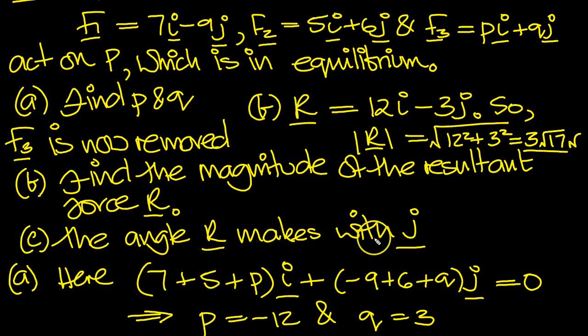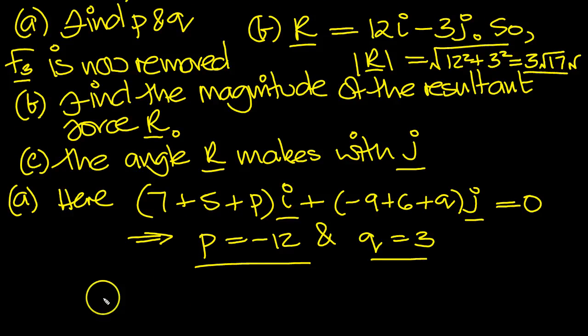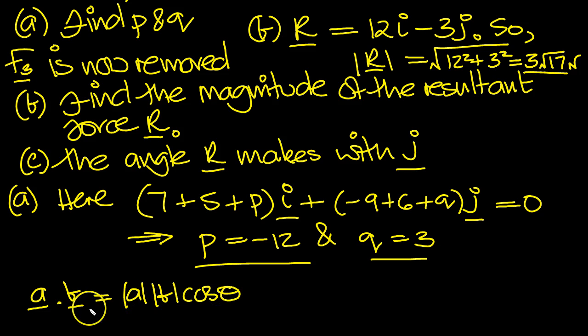OK, the angle R makes with J is what we need to find out finally then. Well, here's our R vector. OK, so remember the dot product rule, A dot B is equal to A, B, cosine of the angle between the two vectors, A and B.